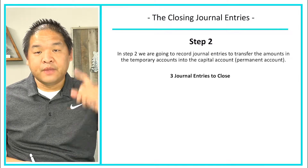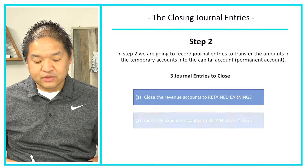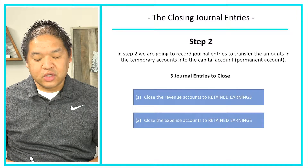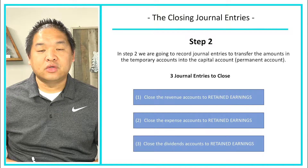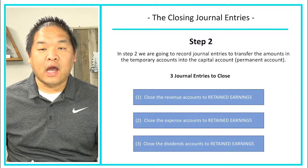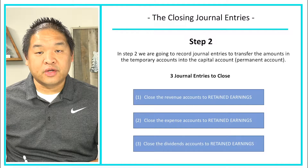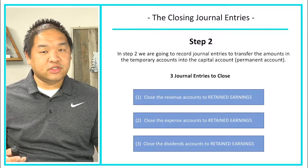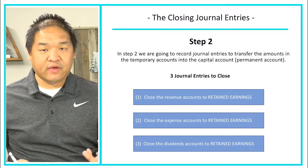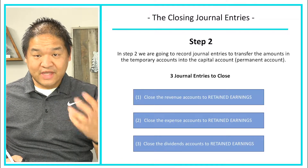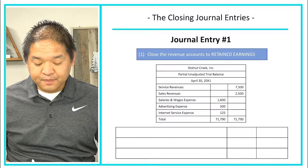This is step two, and in step two we have three entries to do. The first step is closing all of our revenue accounts, the second step is closing all of our expense accounts, and the third step is closing all of our dividend accounts — all of them to the retained earnings account. Now let's dive right into the actual journal entries.